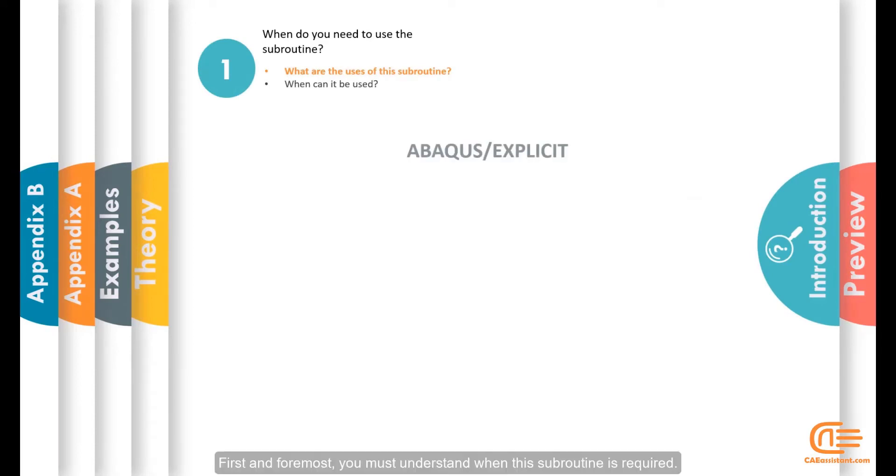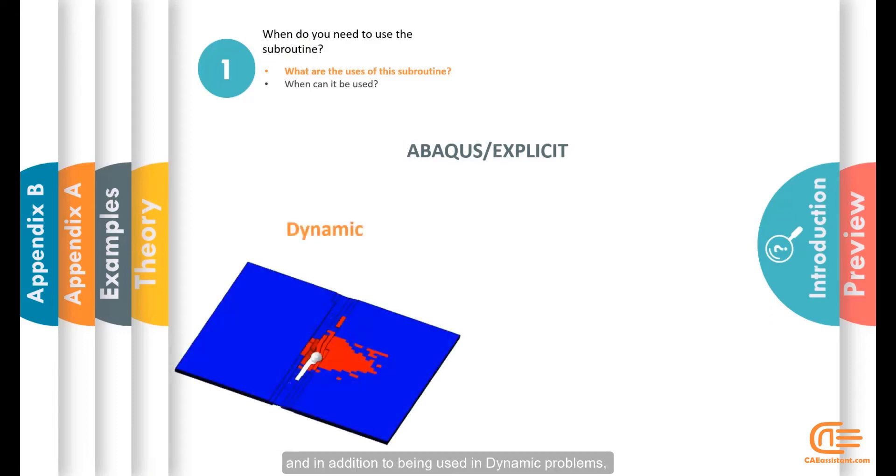First and foremost, you must understand when the subroutine is required. VUMAT is the subroutine in question, so it uses the explicit solver and in addition to being used in dynamic problems,